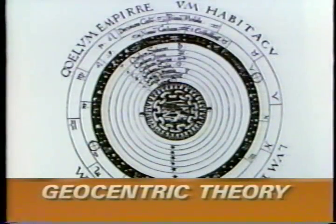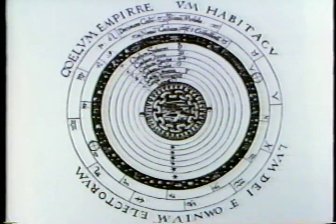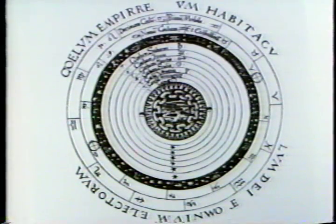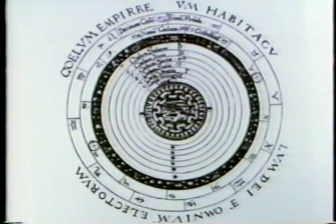The geocentric theory is the belief that the Earth is stationary at the center of the universe, with the sun, moon, stars, and planets revolving around it in complex orbits.